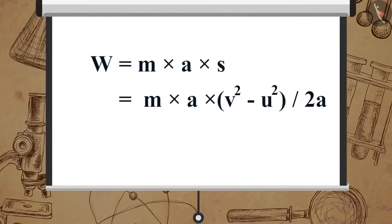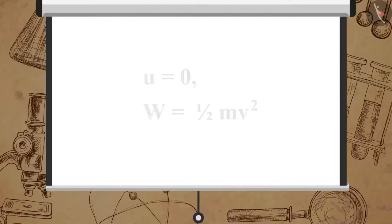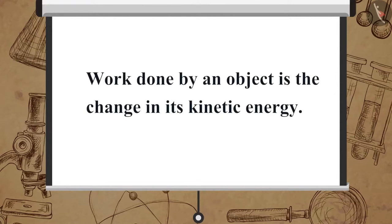If the object was stationary when it started, that is u equals 0, then W equals 1/2 m v squared.